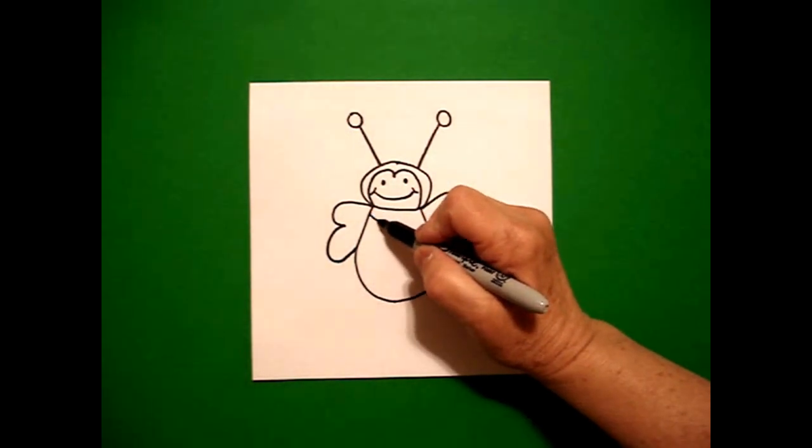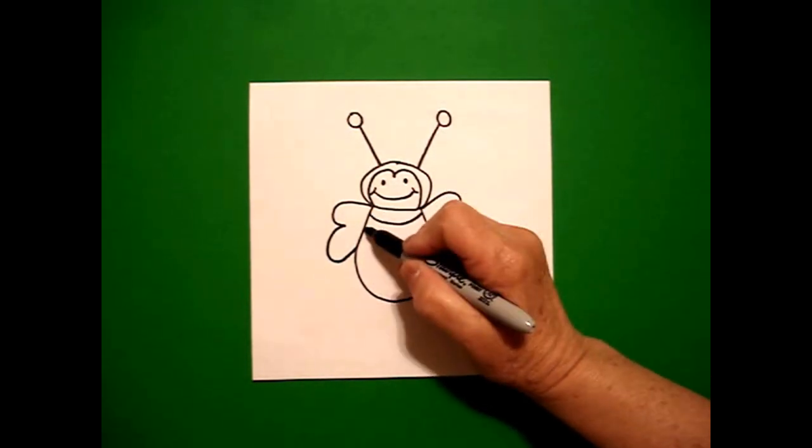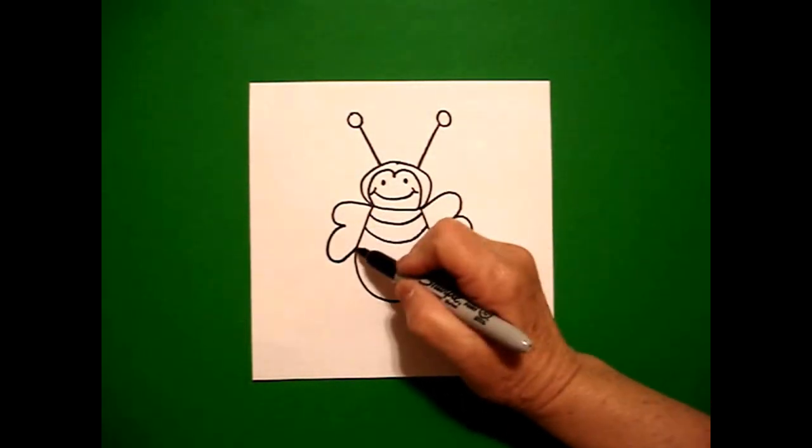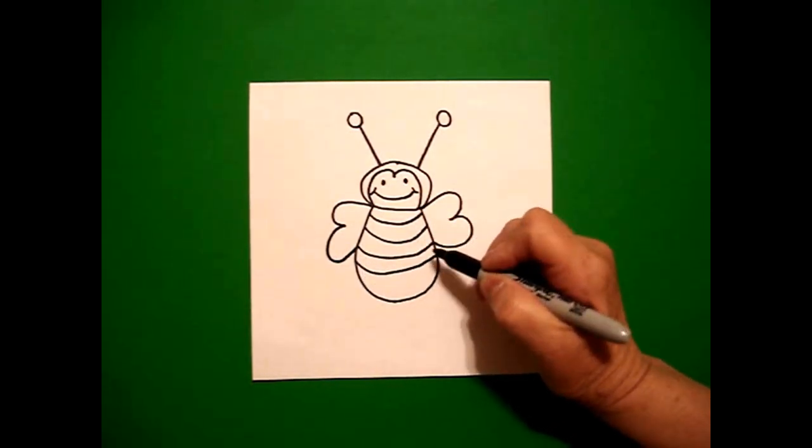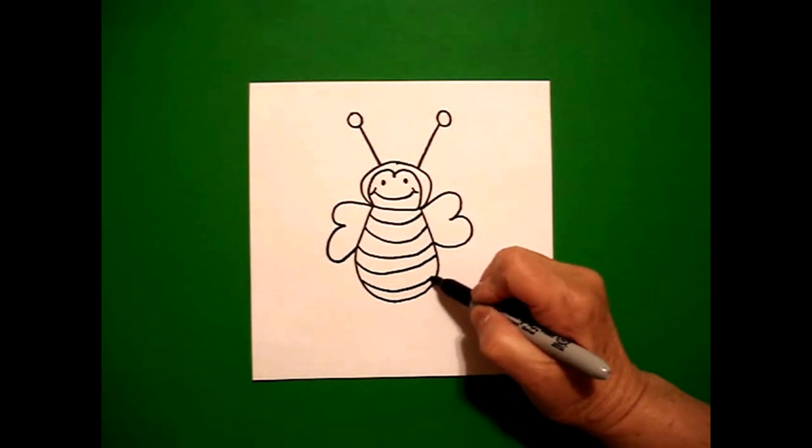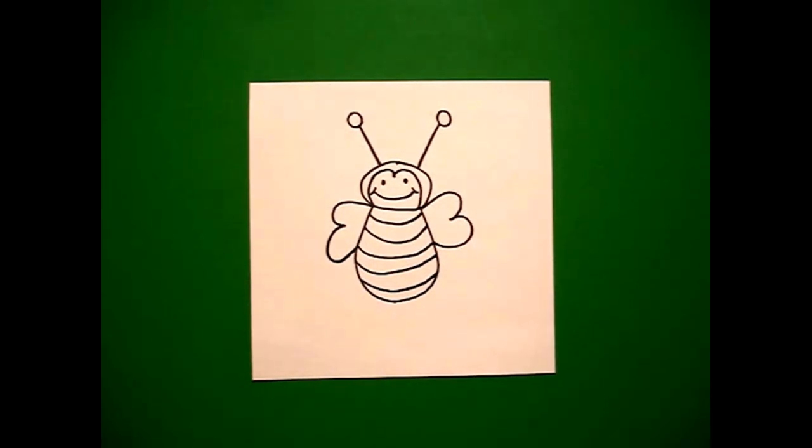Now I'm going to make this just real easy. Curve lines all the way down to the bottom. Keep going. Curve lines all the way down. I'm going to put one on. And now we're ready to color.